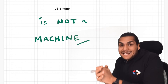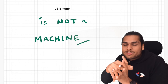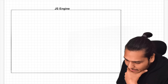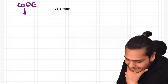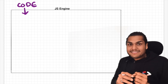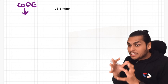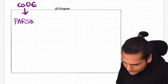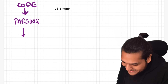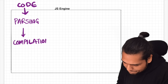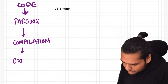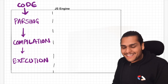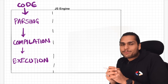Now let's move on to the JavaScript engine architecture and see what actually happens inside it. The JavaScript engine takes code as input — the human-readable code we write in JavaScript — and this code goes through three major steps: first is parsing, second is compilation, and third is execution. These are the three major things happening with your code inside the JavaScript engine.